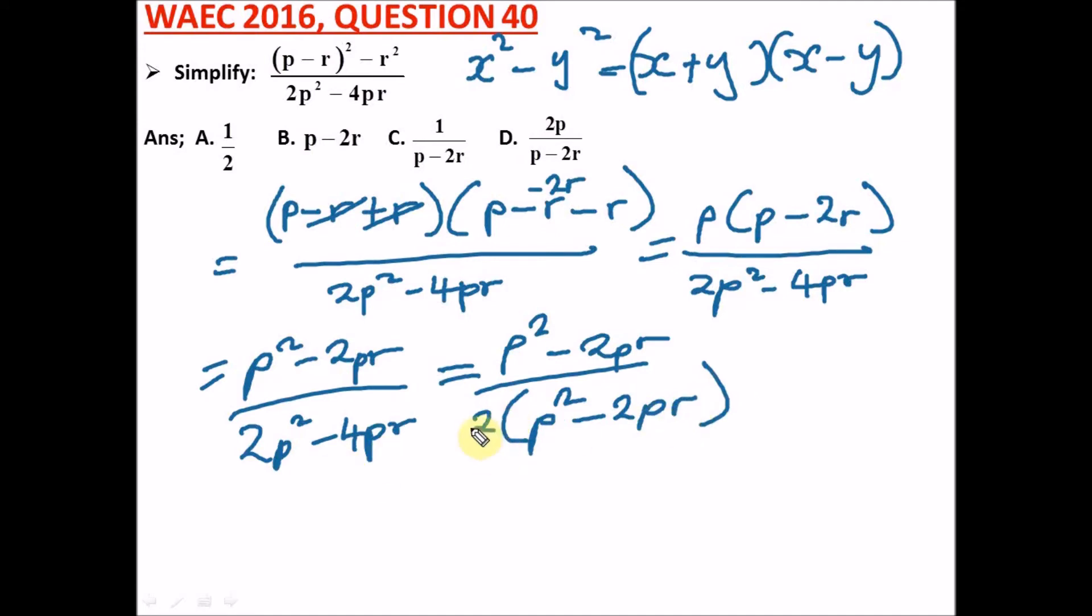Because when we open up this bracket, 2 multiplied by 2 here we're going to get 4, and 2 multiply here we're going to get 2. So from here you can see that we can cancel out this since it's the same as our numerator, and we're left with 1 over 2. Our correct option is option A. Let's go to our next question.